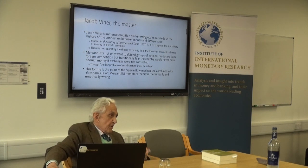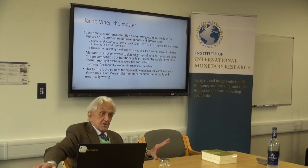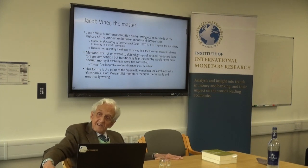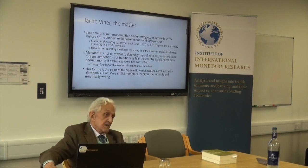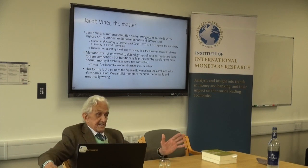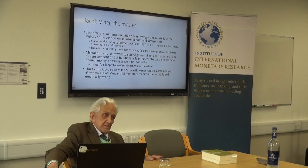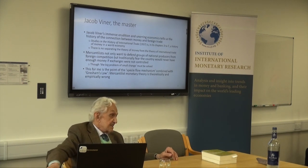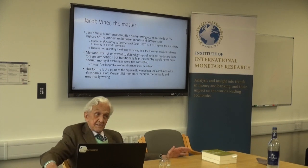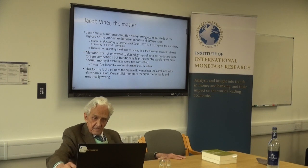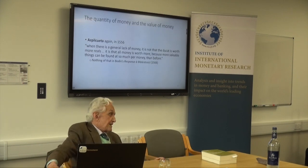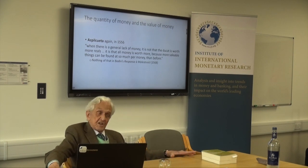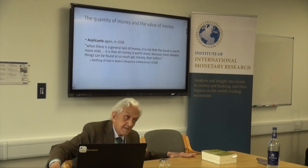When you understand the specie flow mechanism - described beautifully by David Hume - and combine that with Gresham's Law, which says that an overvalued currency will expel the undervalued currency (in Britain, gold was overvalued by Newton and expelled silver from circulation), you can explain the monetary movements of the balance of payments and see that they are best left to themselves. That is the main classical lesson we have to learn.